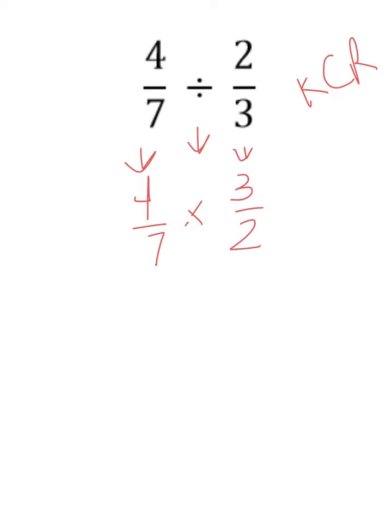Now I'm going to look to see if there's anything I can cross-simplify. So 4 and 2, they are both even, so I'm going to divide them by 2. 4 divided by 2 gives me 2. 2 divided by 2 gives me 1. I'm going to check the other direction, 3 and 7. Again, I don't see anything in common with these two, so I am done cross-simplifying.